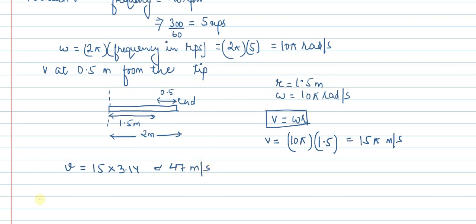So we are having linear velocity at 1.5 meters, or 0.5 meter from the tip, approximately 47 meters per second. This is the solution for this question. Thank you.